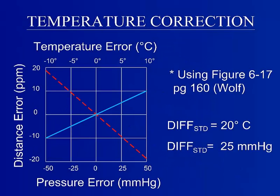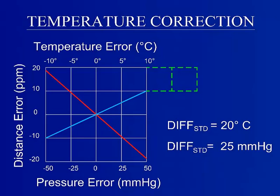This is a standard distance error graph for temperature and pressure correction. Using the differences from the standard temperature and pressure found before, the exact distance error in parts per million can be determined. A temperature difference greater than 10 degrees Celsius is not included on this graph, so extrapolation is required. Using extrapolation, it can be determined that the distance error due to temperature is 20 parts per million.